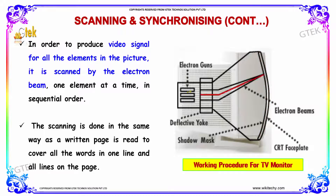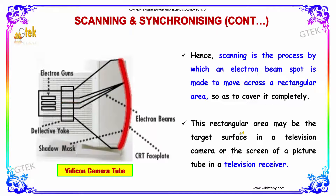Here is the electron gun and electron beam — it is a CRT. Scanning is the process by which an electron beam spot is made to move across a rectangular area so as to cover it completely. This rectangular area may be a target surface in a television camera or the screen of a picture tube in a television receiver.